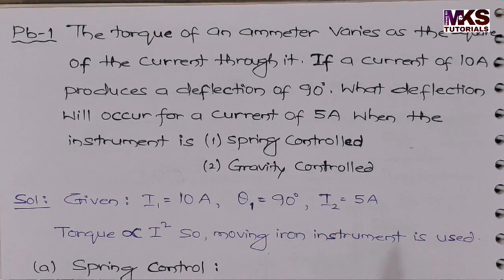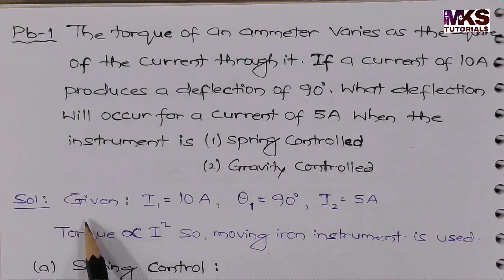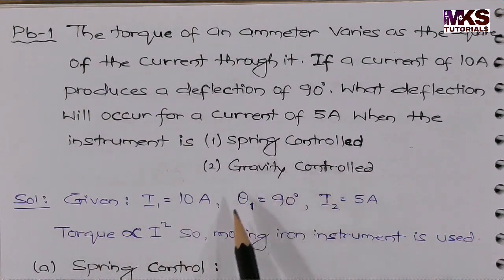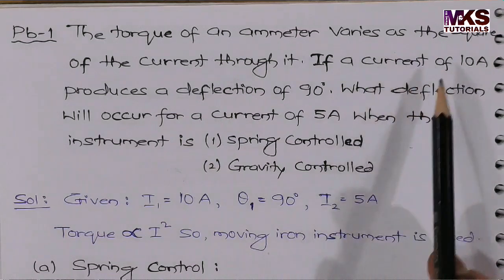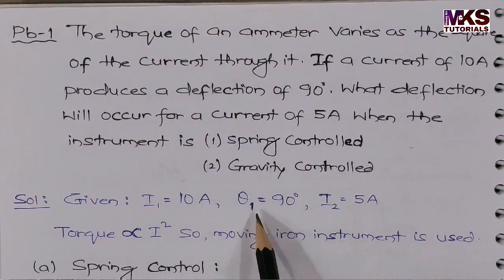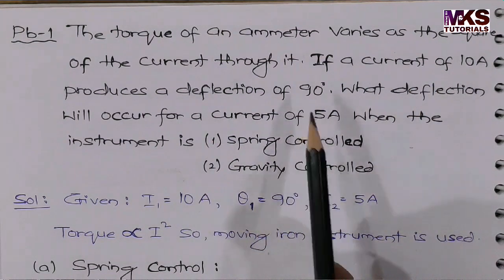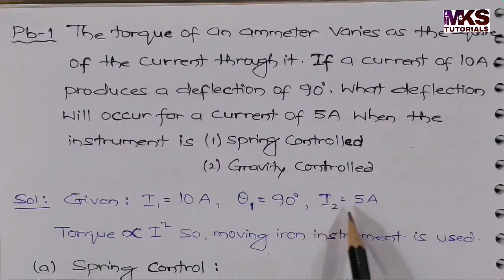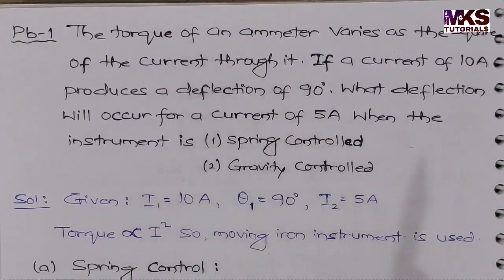The two relations are different with theta. Let's move on to the solution. Given: I₁ = 10A, deflection θ₁ = 90 degrees, and I₂ = 5A. This is the given data.